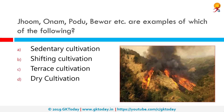Jhum, Onam, Podu, Bivar, etc. are examples of which of the following? These are examples of shifting cultivation. Over 86 percent of the people living in the hills are dependent on shifting cultivation in India. In the northeastern region of India — comprising the states of Assam, Manipur, Meghalaya, Nagaland, Tripura, Arunachal Pradesh, and Mizoram — shifting cultivation is largely practiced in hilly areas.